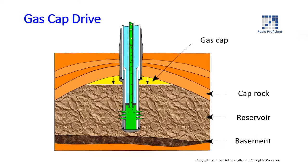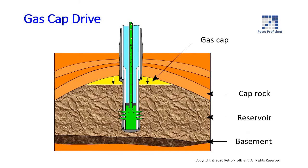Gas cap drive. Some reservoirs contain more gas than can be contained in solution at reservoir temperature and pressure conditions. The excess gas rises to the top of the reservoir and forms a cap over the oil. The expansion of the gas cap during production maintains the drive effect. Gas cap drive is more efficient than dissolved gas drive, typically yielding 25 to 50 percent of recoverable oil.